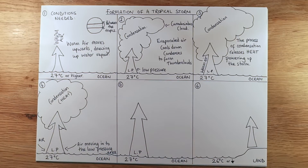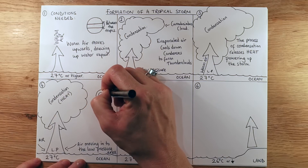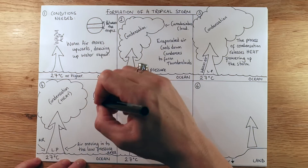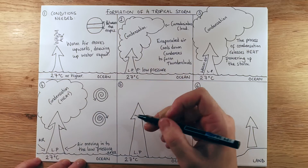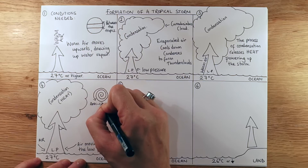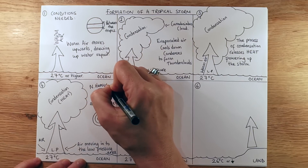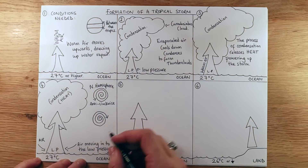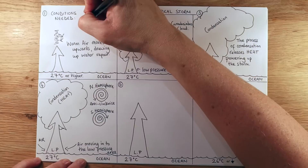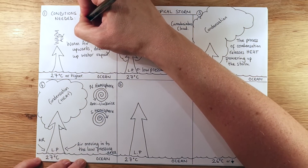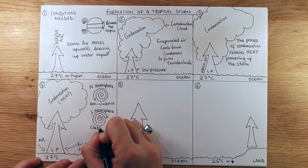The storm is also spinning due to the Coriolis effect, and it spins differently depending on what hemisphere you're in. The system going anti-clockwise is in the northern hemisphere, and the one going clockwise is in the southern hemisphere.